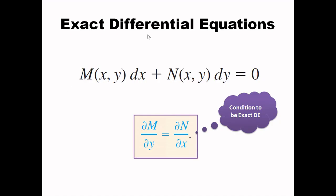The general form of exact differential equations is given. In this general form we have a function M of x and y, along with dx, plus another function N which also depends on x and y, along with dy, is equal to 0. If you come across such equations, you have to prove that the partial derivative of M with respect to y is equal to the partial derivative of N with respect to x. If this condition gets satisfied, then the given equation is an exact differential equation.